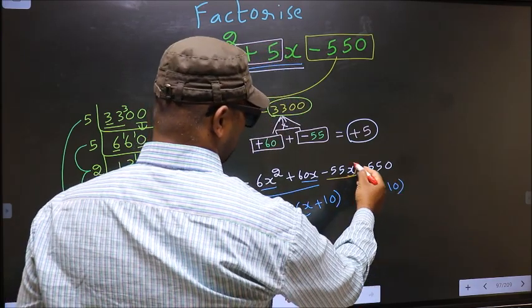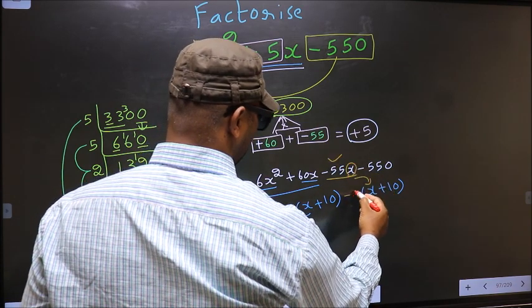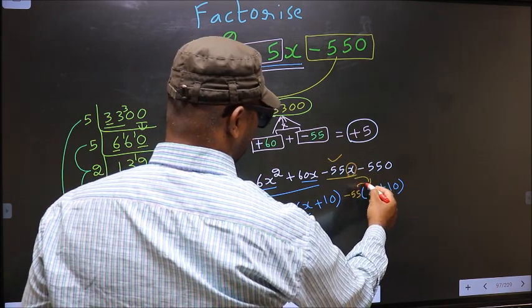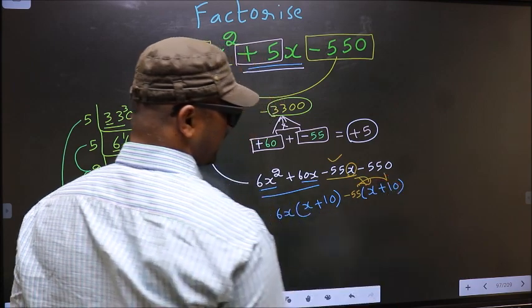Now from this, x has gone inside, so outside you get minus 55. Even if you multiply and check, still you get the same thing.